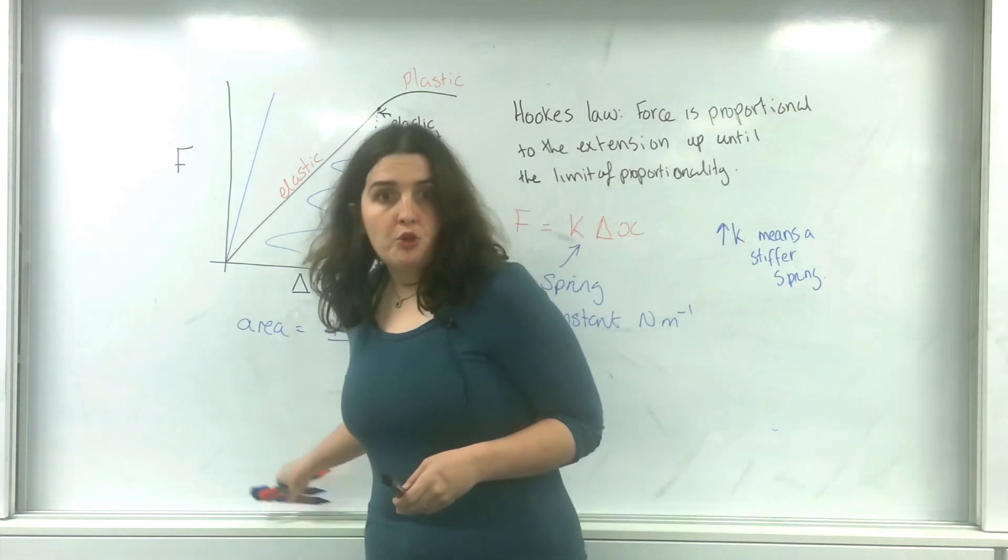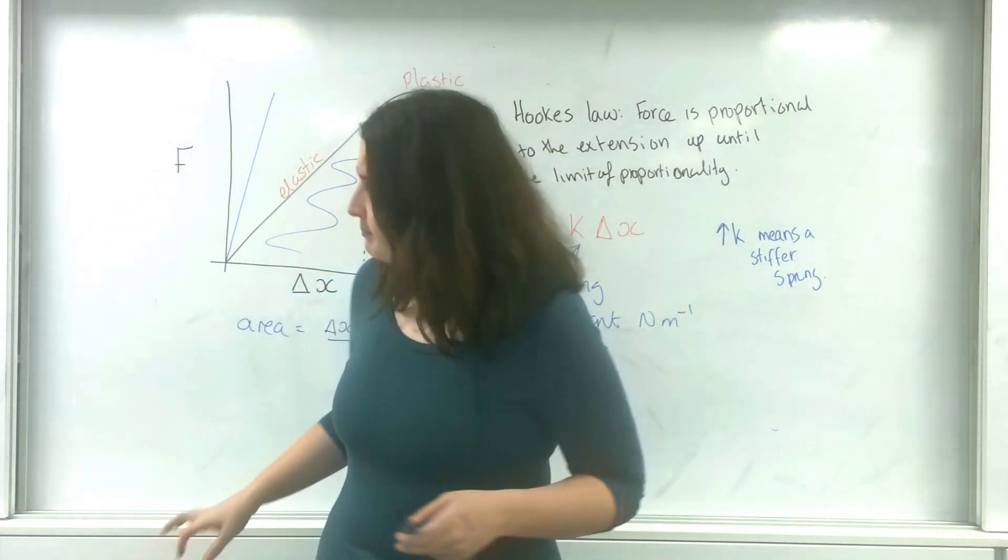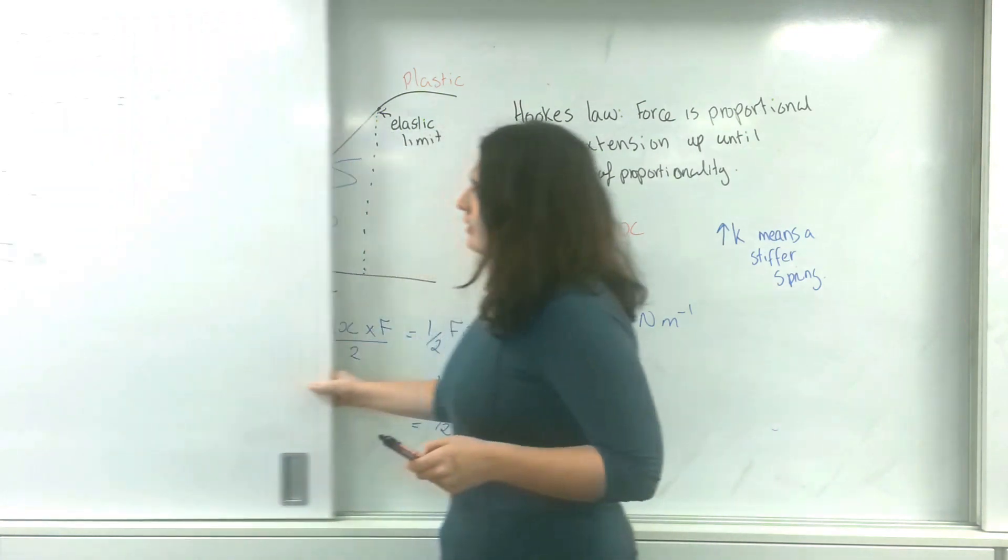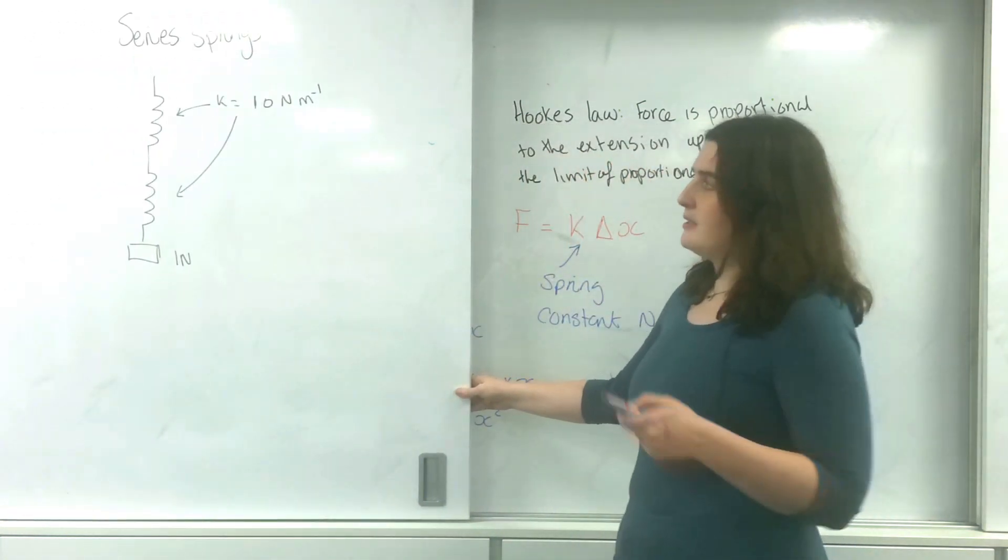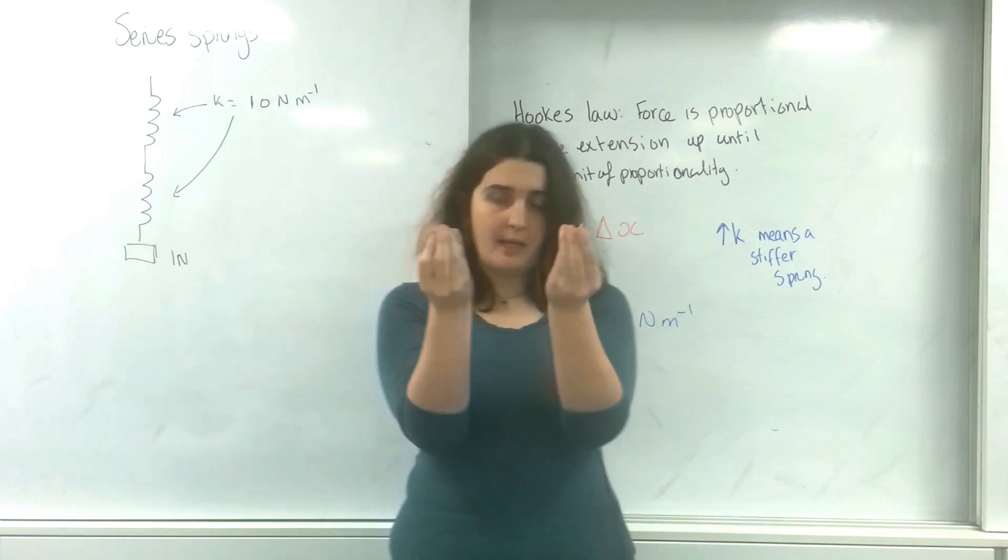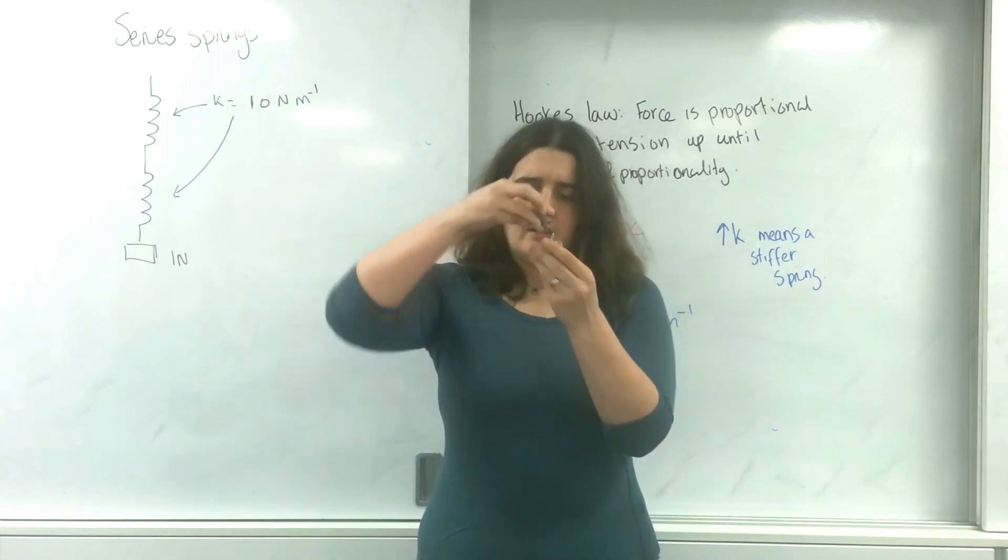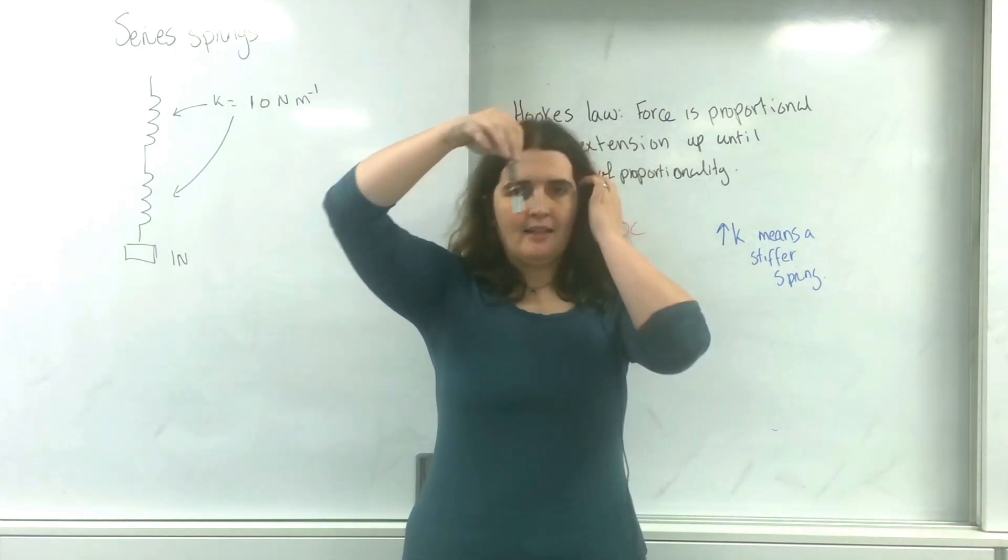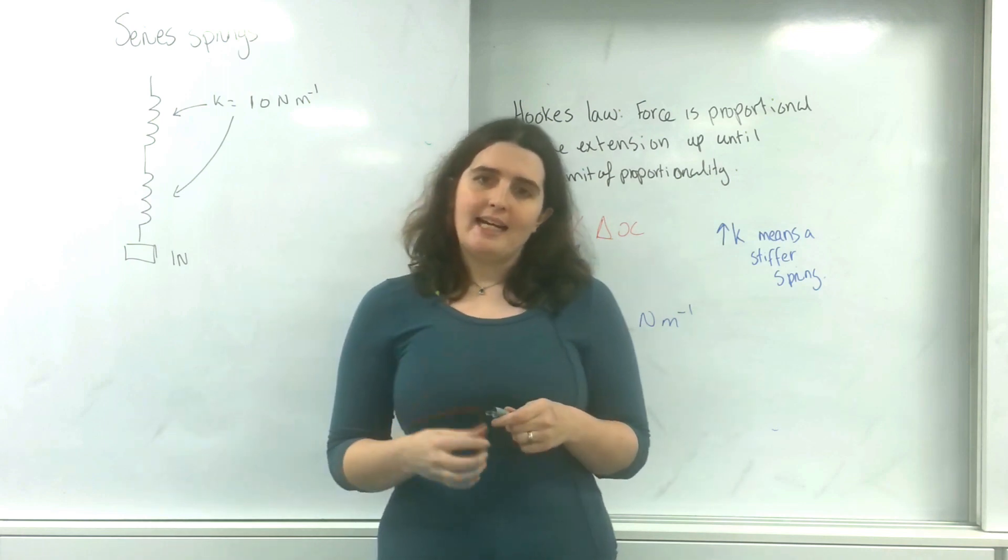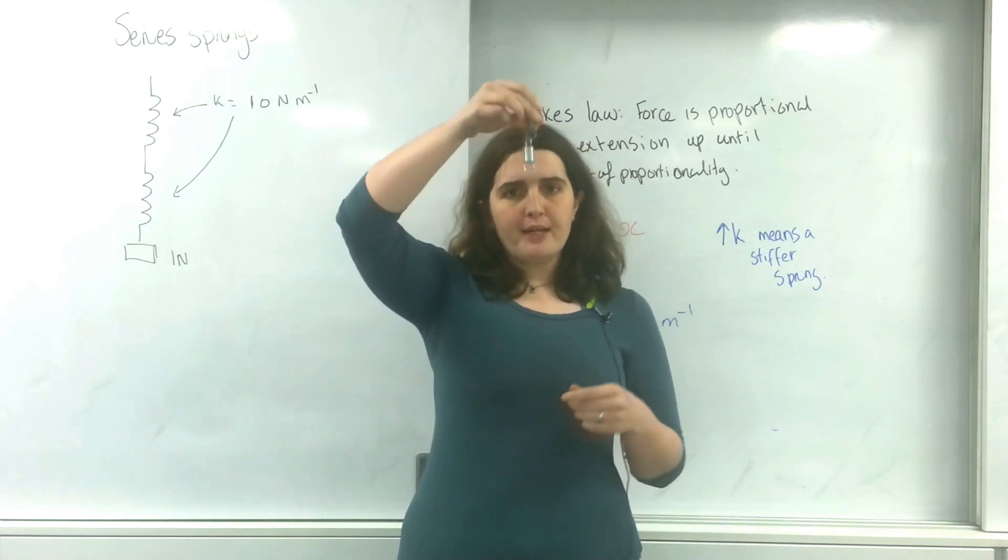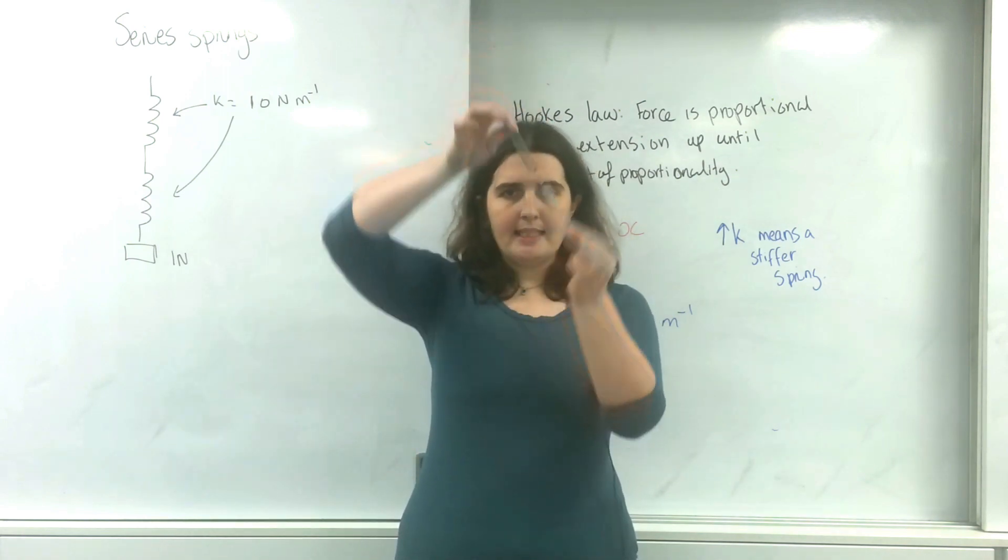So first of all I'm going to talk about a series system. What I mean by a series system is two springs, separate springs, joined like this. And what I want to find out is the overall spring constant for this whole system.